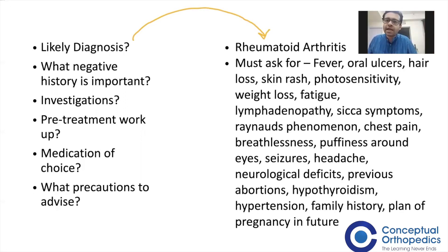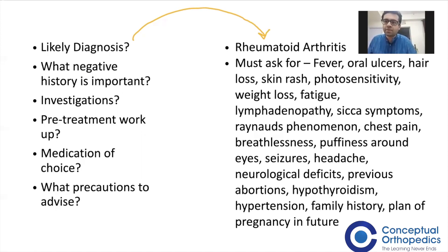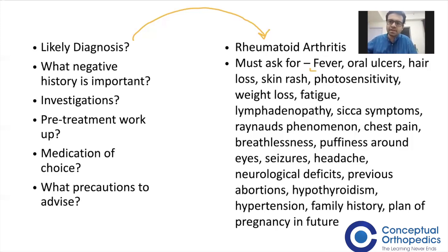Now, what negative history is important? I have included this because such a presentation can have many differential diagnoses. For every patient who presents with polyarthritis, we must ask these things, because such arthritis can be present in SLE or lupus, Sjögren's syndrome, or mixed connective tissue disease. So the whole list — fever, oral ulcers, hair loss, rash — all of these features can be present.